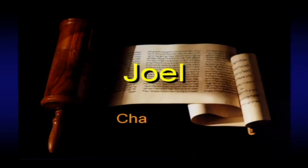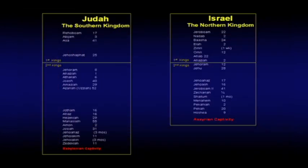The book of Joel, and we're going to deal with chapter 1 — a little three-chapter book that we're going to deal with here. Just by way of perspective, you know that after Solomon died, the kingdom split into two.